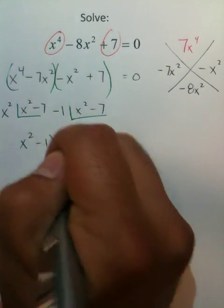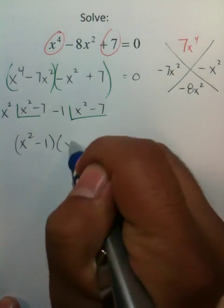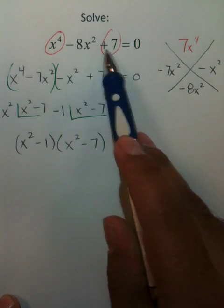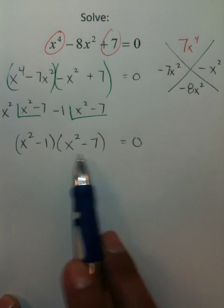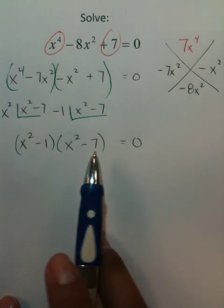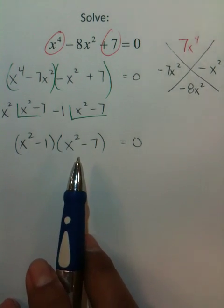After you factor the problem, you broke down this trinomial into these two polynomials being multiplied together. Since they have powers of 2, they're quadratics, and you're able to solve these either using the quadratic formula.